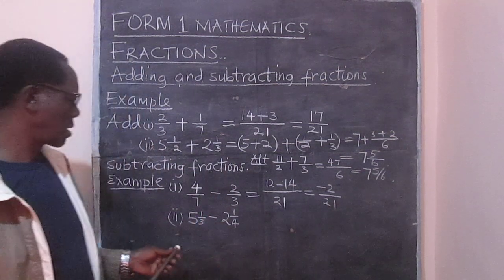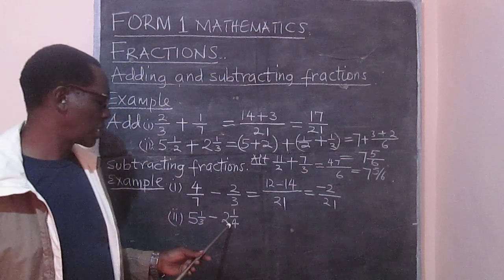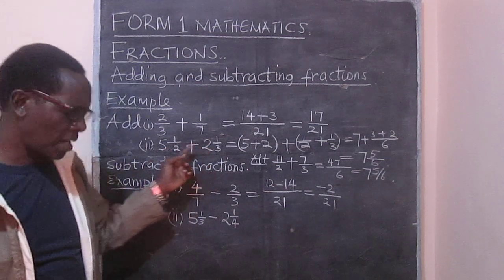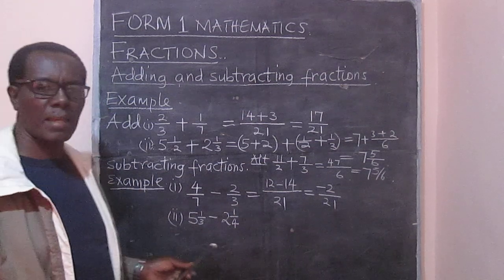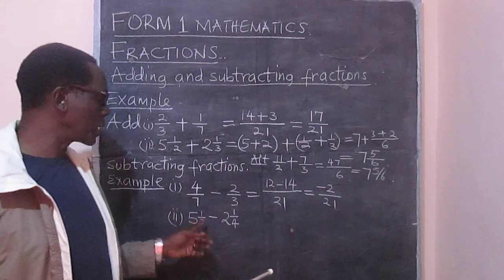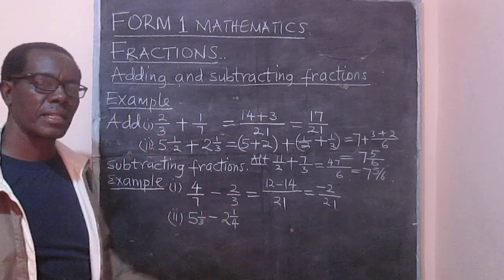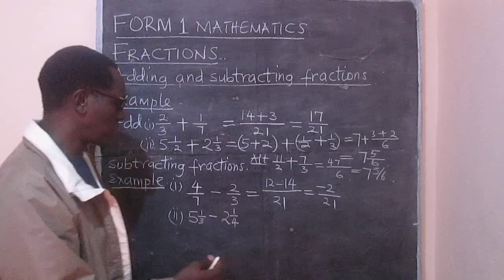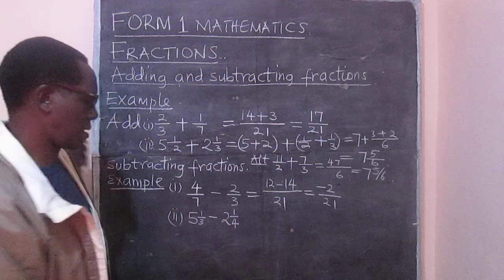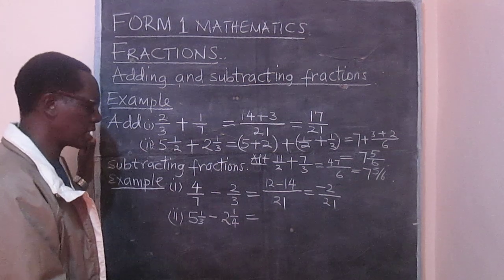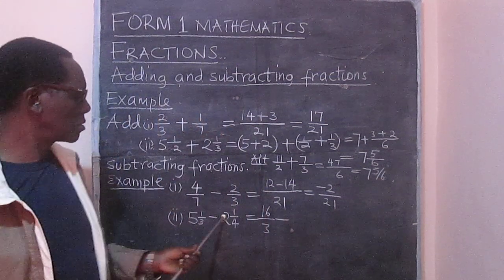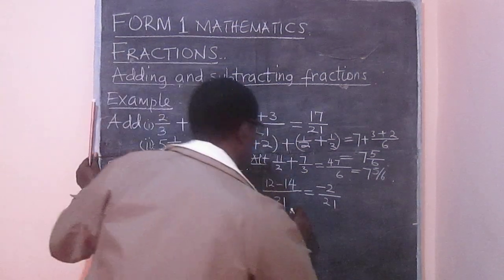We are on our last one now. We have 5 and 1/3 minus 2 and 1/4. We can apply the same argument that we applied here. We took the whole numbers first and added them. But instead of maybe going that way, we could just convert this 5 and 1/3 to an improper fraction, and also 2 and 1/4, and then subtract. So this is going to be 16 over 3, because we are saying 5 times 3 plus 1, that is 16 over 3. Subtract 2 times 4 is 8, plus 1 is 9, subtract 9 over 4.